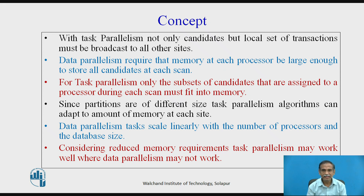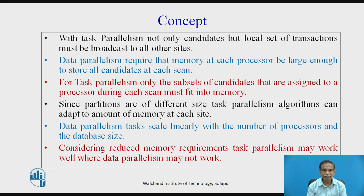For task parallelism, only the subset of candidates assigned to a processor during each scan must fit into memory, since partitions are of different sizes. The task parallelism algorithm can adapt to the amount of memory at each site. Data parallelism tasks scale linearly with the number of processors and the database size, reducing the time and increasing the speed of generating rules. Considering reduced memory requirements, task parallelism may work well when data parallelism may not.